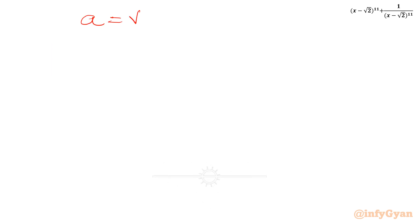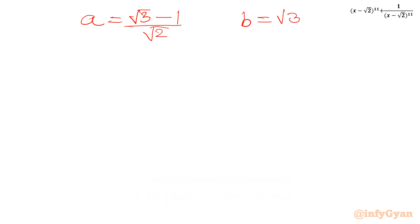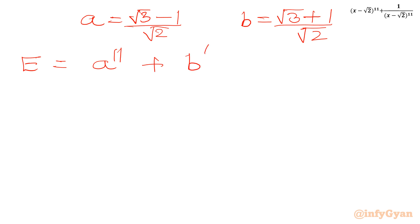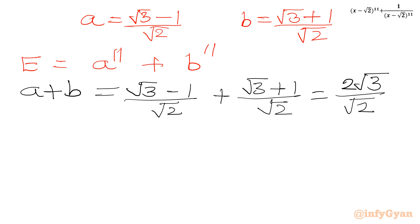Our required expression is a to the power 11 plus b to the power 11. Let us calculate a plus b first. a plus b equals (root 3 - 1)/root 2 plus (root 3 + 1)/root 2, which gives 2 root 3 over root 2. Cancelling root 2 with 2 gives root 2, so a plus b equals root 6.